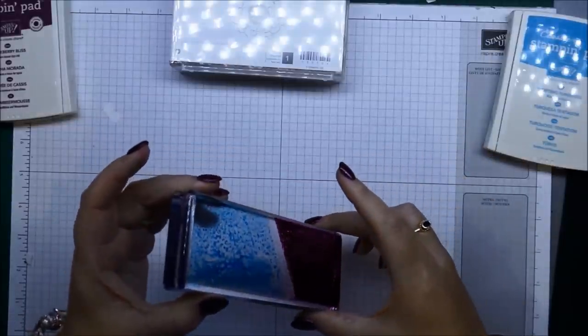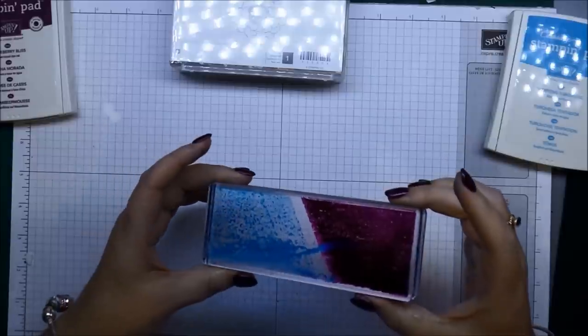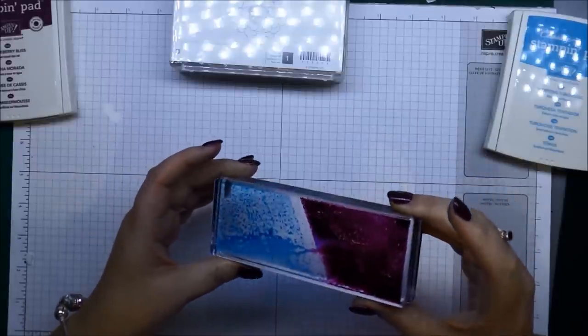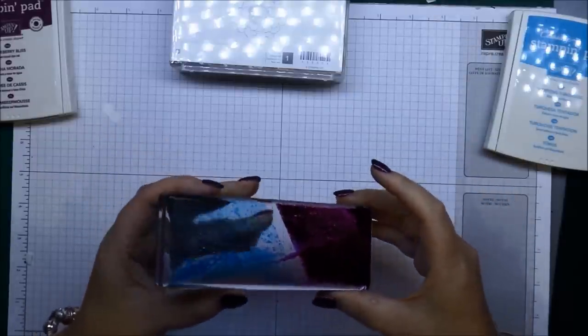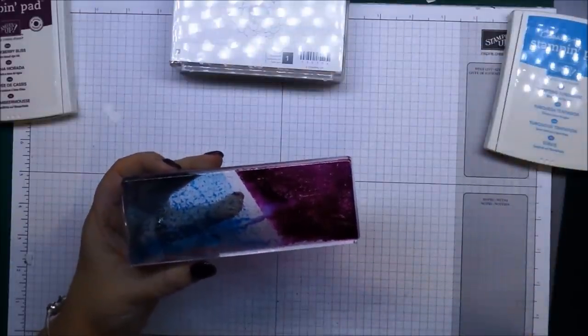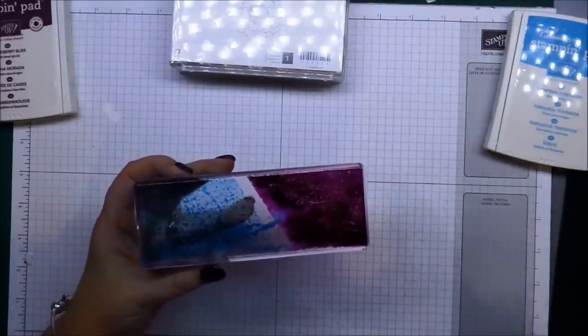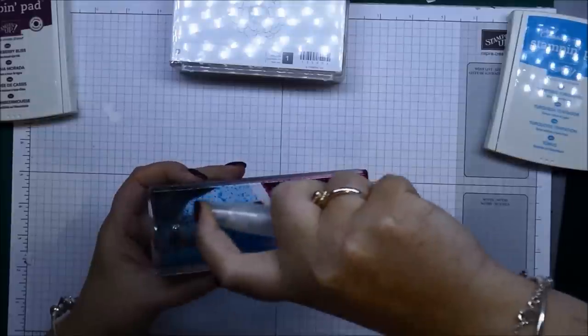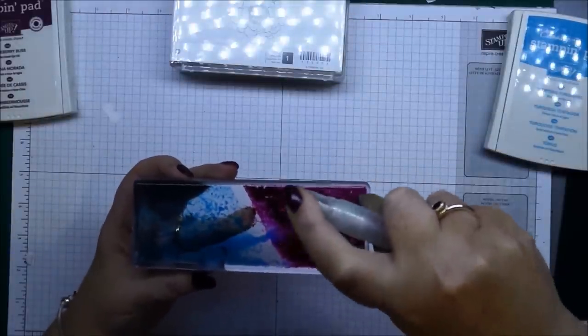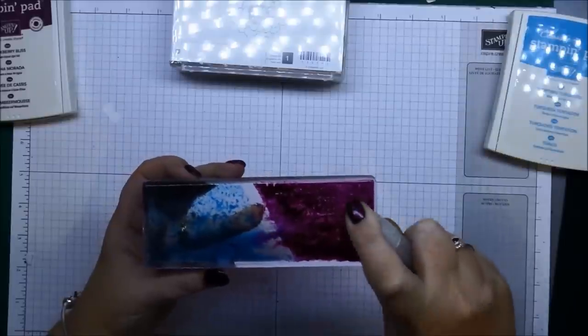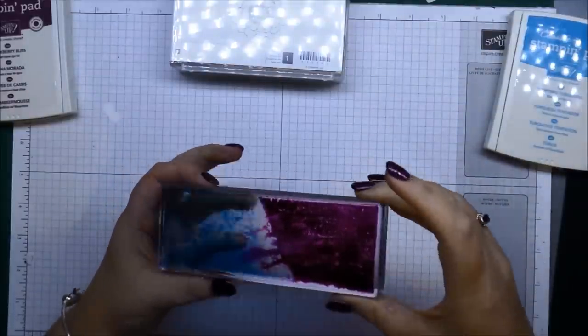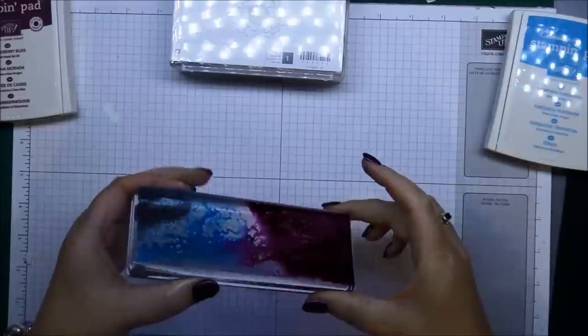Okay, and then what I'm going to do is, I might need to put a little bit more water. The blue's got a bit of water on there. I just want them to meld a little bit in the middle, so I'll just get my spritzer again and just sort of spritz a bit.